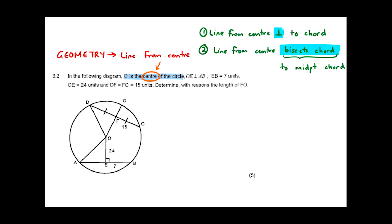The question states that OE is perpendicular to AB — since they're perpendicular we can use the theorem, not the converse. It also says EB is 7 units and OE is 24 units. It also says DF equals FC, meaning that chord is bisected. We are asked to determine with reasons the length of FO.